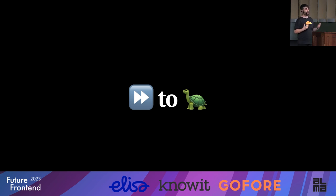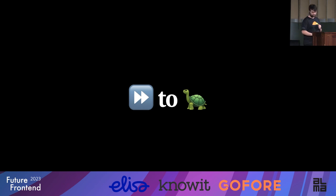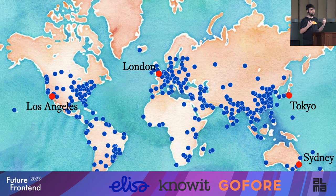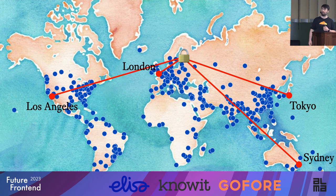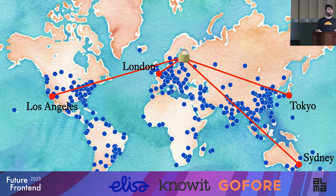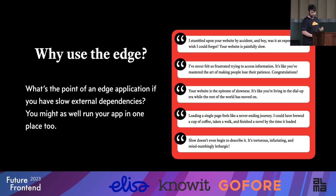The main problem is we're introducing accounts, and accounts require data storage. So you've gone from a fast edge application to a very slow problem. Your servers are all around the world hitting edge compute servers, but your authentication database, classically, is very central. You end up with the same slow load times as before — users in Los Angeles hitting a centralized auth server in Helsinki. At that point, why use the edge? What's the point of an edge application if you have these slow external dependencies?